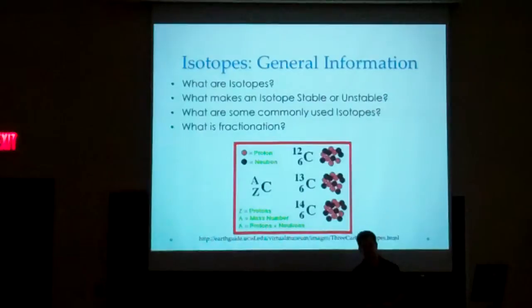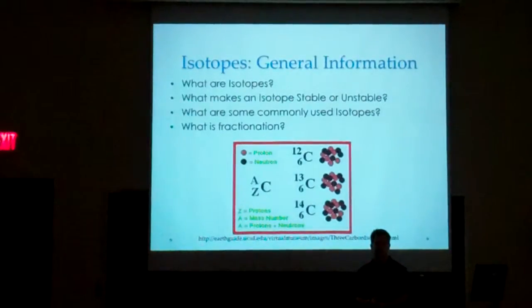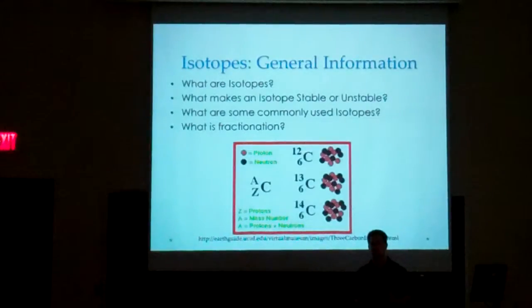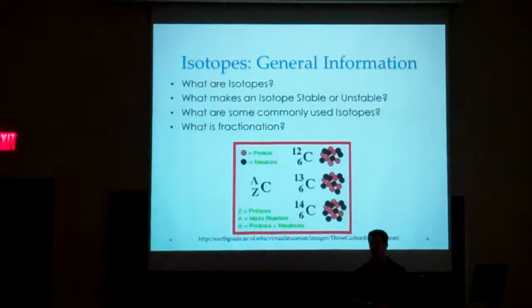An example of fractionation is evaporation. Say you have water at the equator. When this evaporates, the lighter isotope — oxygen-16 in this case — evaporates more readily than the heavier oxygen-18. Both oxygen-16 and oxygen-18 do evaporate, but as the water vapor moves through the atmosphere and travels further north from the tropics, you lose more oxygen-18 first since it's heavier and precipitates out first. So you end up with a higher amount of oxygen-16 present in the clouds and precipitation at the poles.